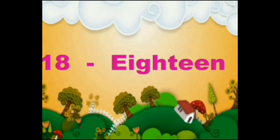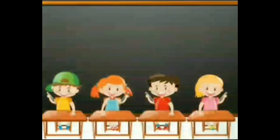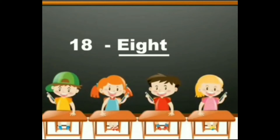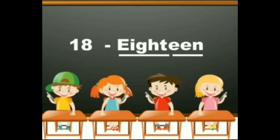Children, now let us split and learn the spelling. 1, 8 — 18. E-I-G-H-T — 8. 1, 8 — 18. E-I-G-H-T-E-E-N. 18. Children, in previous number names you have learnt to add T-E-E-N. But here, the spelling of number 8 already has T at last. So we will just add E-E-N.